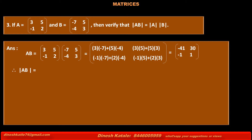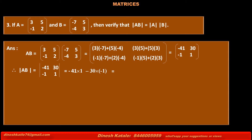Therefore, the determinant of AB equals the determinant of [-41, 30; -1, 1], which is (-41)×1 minus 30×(-1). That is -41 minus (-30), equal to -41 + 30, which is -11. Consider this as statement 1.